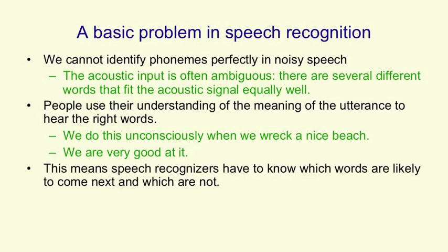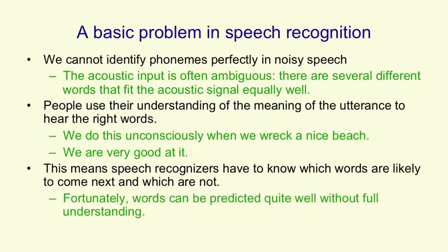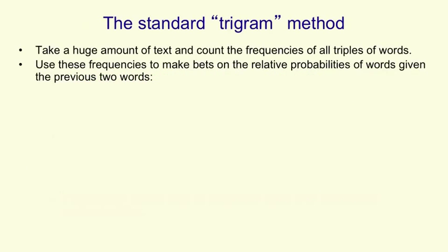That means that speech recognizers have to know which words are likely to come next and which are not. Fortunately, words can be predicted quite well without having a full understanding of what's being said. So there's a standard method for predicting the probabilities of the various words that might come next. It's called the trigram method.